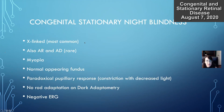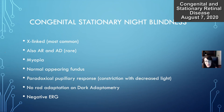Congenital stationary night blindness is most commonly X-linked, but you can also have autosomal recessive and autosomal dominant forms. Patients tend to be myopic. The classic three findings are decreased night vision, decreased vision (attributed to myopia), and nystagmus. The fundus will look normal. They may have a paradoxical pupillary response — with lower light levels, there's pupillary constriction instead of dilation. They'll have no rod response on dark adaptometry and a negative ERG, which is also a boards question.